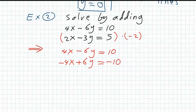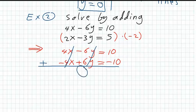If we do adding now, these are cancelled because 4x minus 4x is zero. These are also cancelled: minus 6y plus 6y is zero, so the entire left-hand side is zero. Ten minus ten is also zero, so the right-hand side is also zero. We have zero equals zero. X disappeared, y disappeared, we have no equation — but this is a true statement.